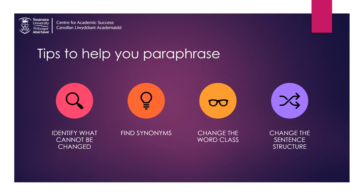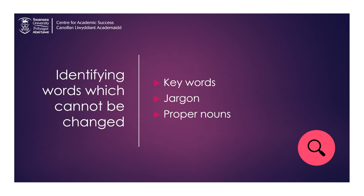First, you should go through the text to identify which words can't be changed. These could be subject-specific words or keywords which are central to your topic. This can also include jargon, which are special words used within a profession or field. Additionally, you can't change proper nouns, for example, names of people, places, events, or dates.